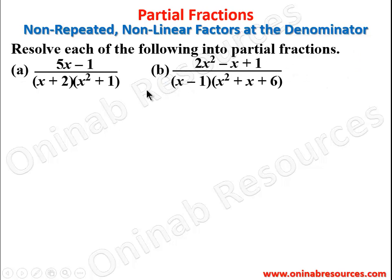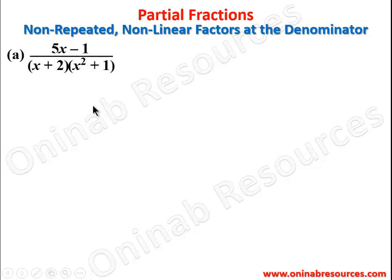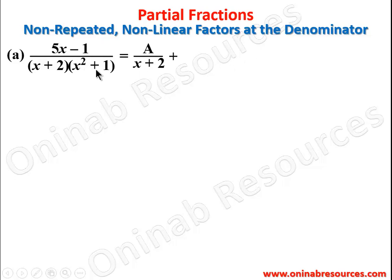We start from problem (a). This is a linear factor combined with a non-linear factor, and none of the two factors are repeated. So the linear one will still be treated as in the first video — we have it as A over (x + 2), then plus, since this is of degree 2, we have a linear numerator: (Bx + C) over (x² + 1).